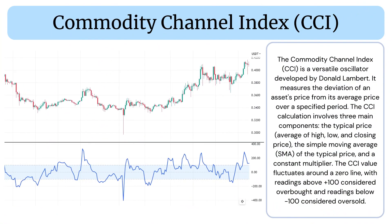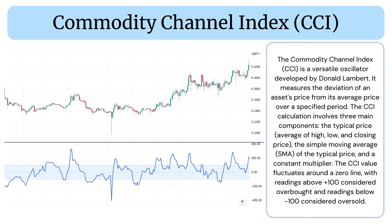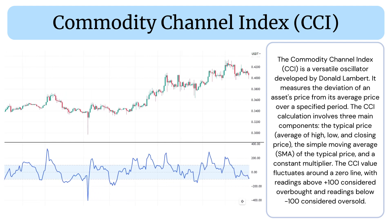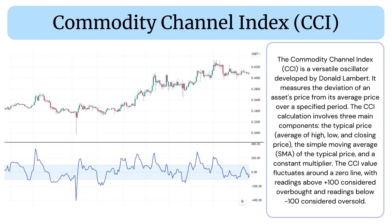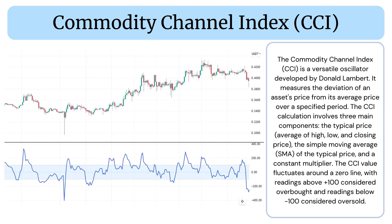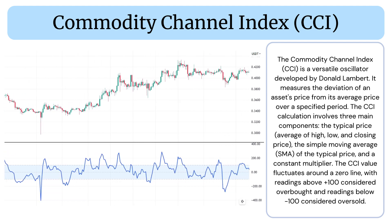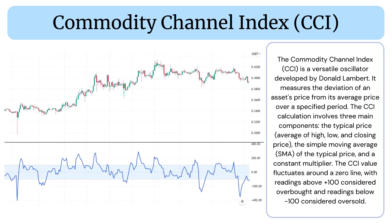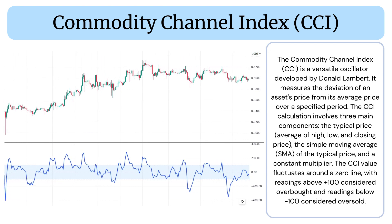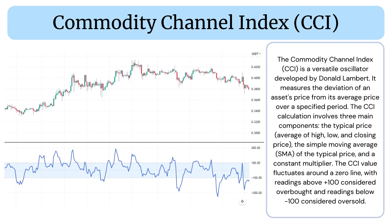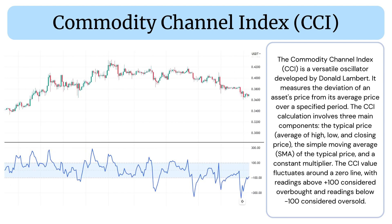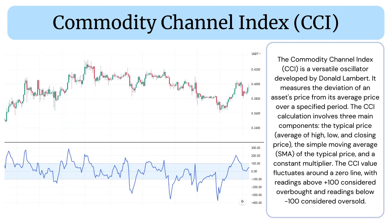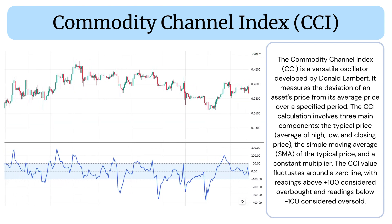The Commodity Channel Index (CCI) is a versatile oscillator developed by Donald Lambert. It measures the deviation of an asset's price from its average price over a specified period. The CCI calculation involves three main components.